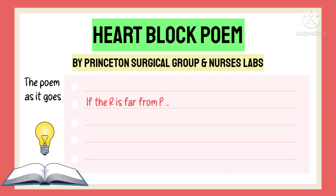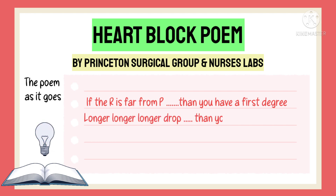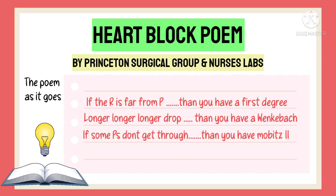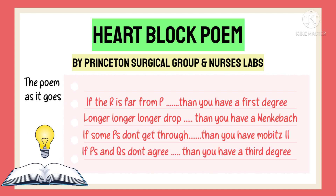The poem as it goes: If the PR is far from P, then you have a 1st degree. Longer, longer, longer, drop — then you have a Wenckebach. If some P's don't get through, then you have a Mobitz 2. If P's and Q's don't agree, then you have a 3rd degree.